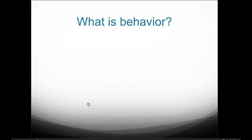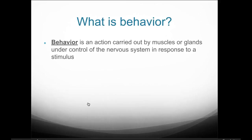Chapter 43 deals with behavioral or animal ecology. Basically, what is behavior? Behavior can be described as an action that is carried out by muscles or glands under control of the nervous system in response to some sort of stimulus. A characteristic of life is that as living things, we respond to our environment, and those responses are caused by stimuli.